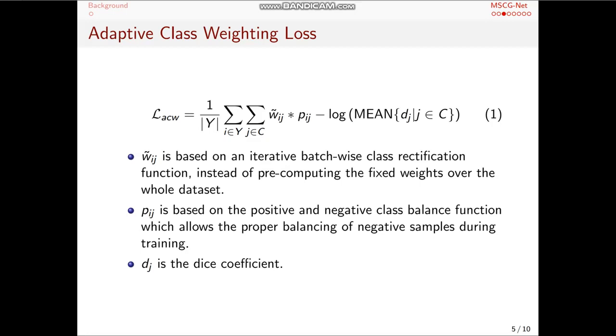The design of adaptive class weighting is basically to iteratively compute the weights from batch to batch according to the median frequency balance method, instead of using the older pre-computed fixed weights over the whole dataset. And also the design of the positive-negative class balance function allows the proper balancing of negative samples during the training process.